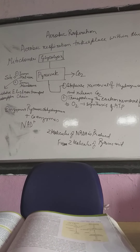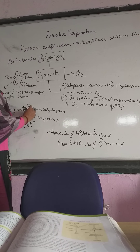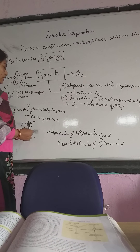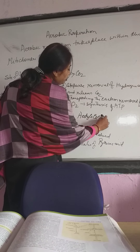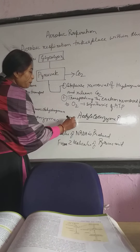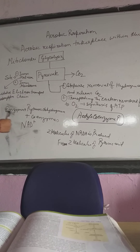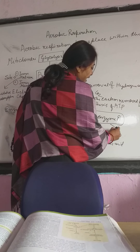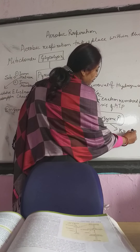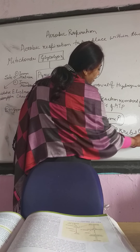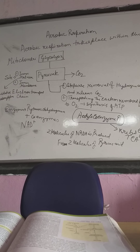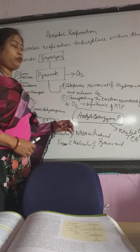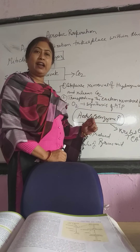In this process, acetyl coenzyme A is produced with the help of pyruvate dehydrogenase. This acetyl coenzyme A then enters a cycle known as the Krebs cycle, or TCA — tricarboxylic acid cycle. The TCA cycle will be the next topic we deal with.